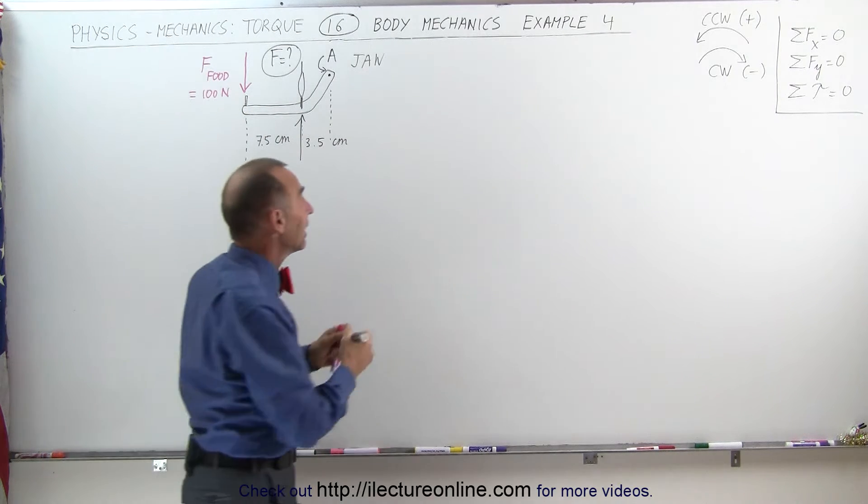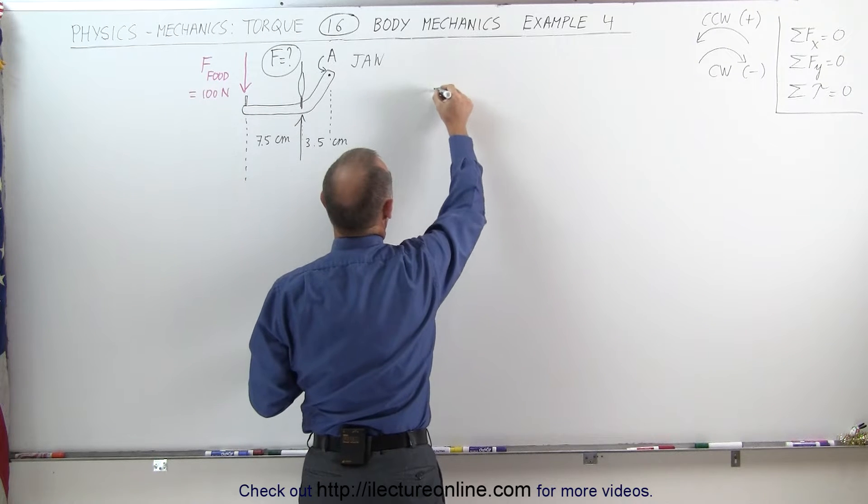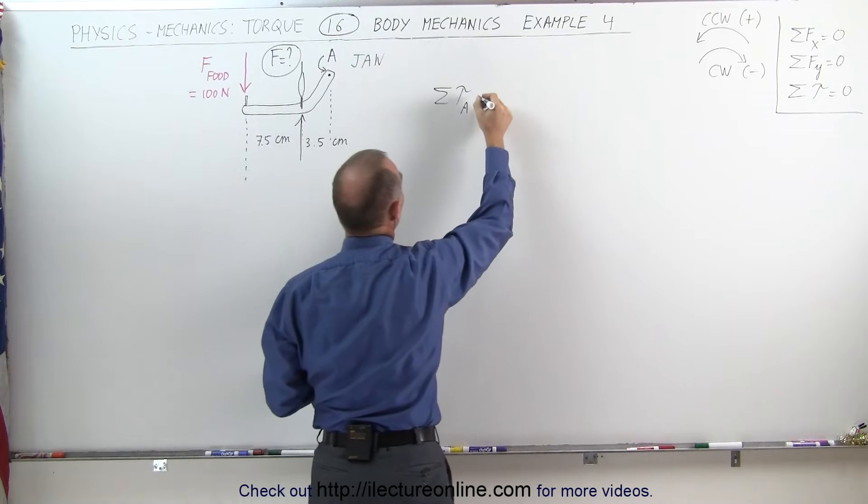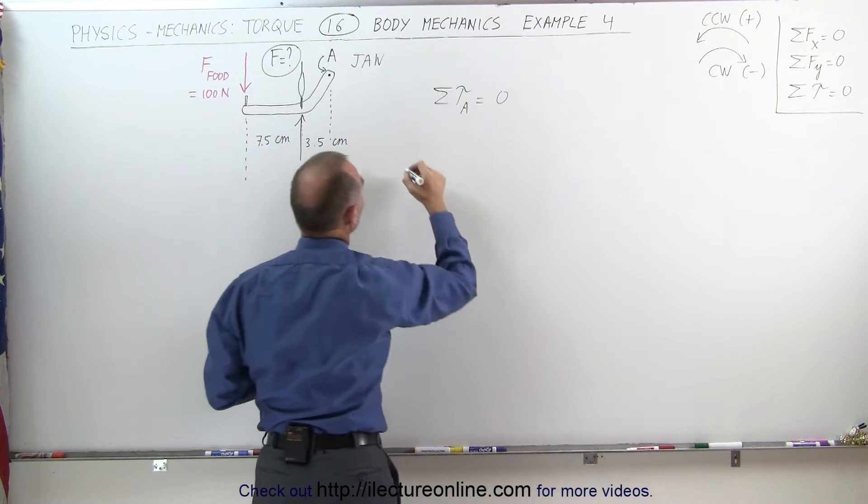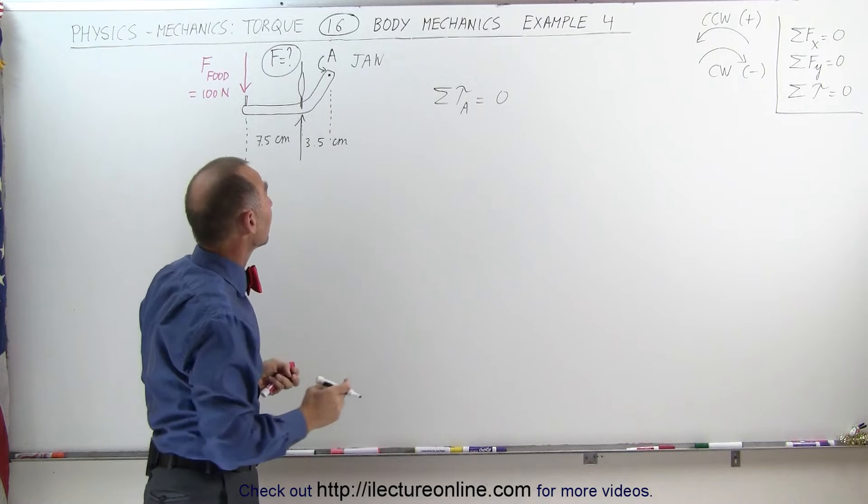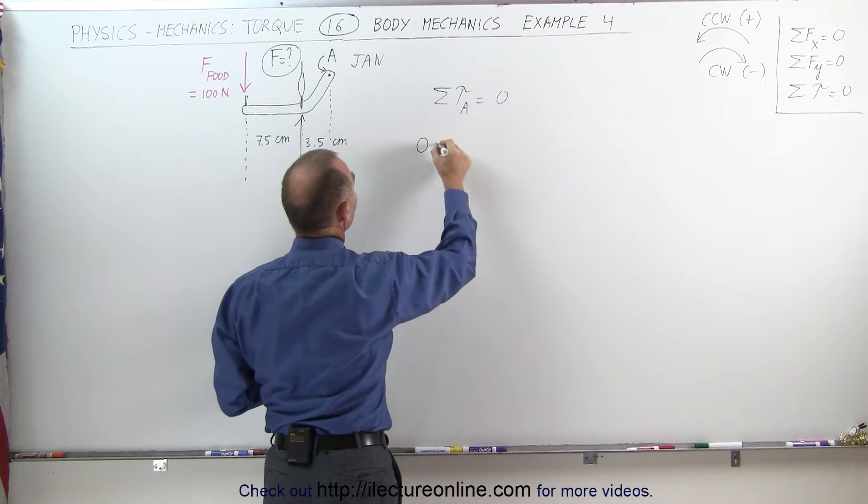Again, we can use the technique that the sum of the torques about point A, because that's where the hinges of the jawbone must add up to zero, which means if we add up all the torques together, they must add up to zero when everything is in equilibrium, so zero is equal to,